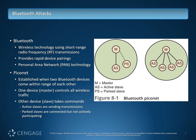PAN technology is sometimes also referred to as a PICONet. This is established when two Bluetooth devices come within range of each other and you start creating a hierarchy. One device controls all wireless traffic — that's your master interface — and then you have slave devices that connect as well. Active slaves send transmissions, and parked slaves are connected but not actively participating. These devices are continuously transitioning between dormancy and activity, becoming either active or parked accordingly.